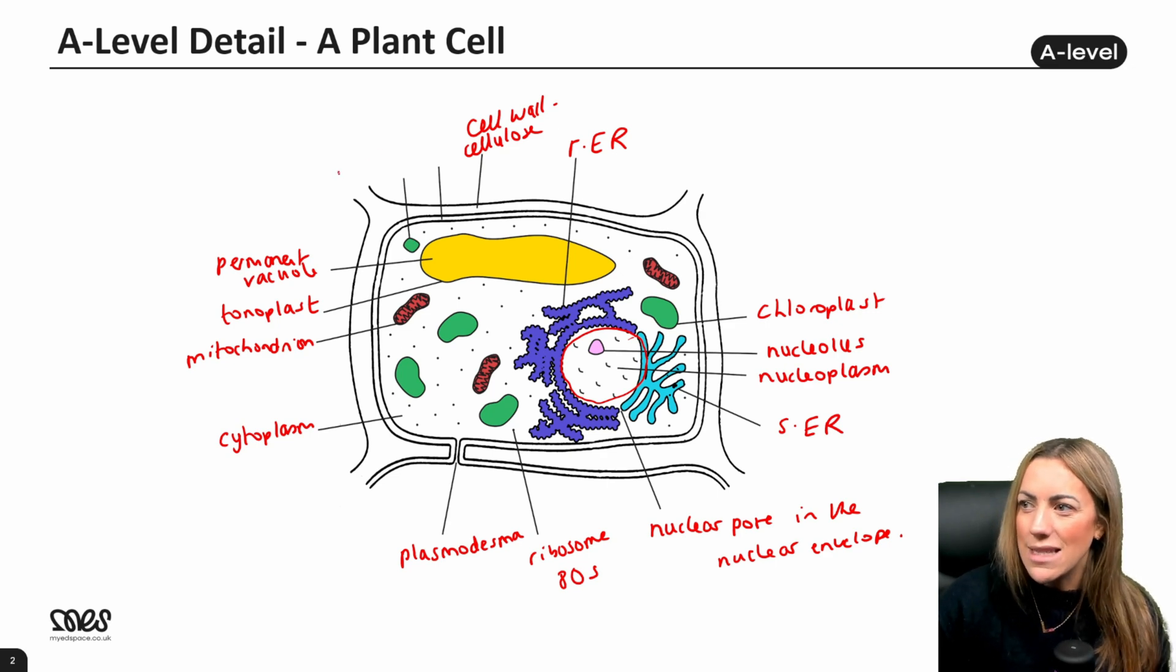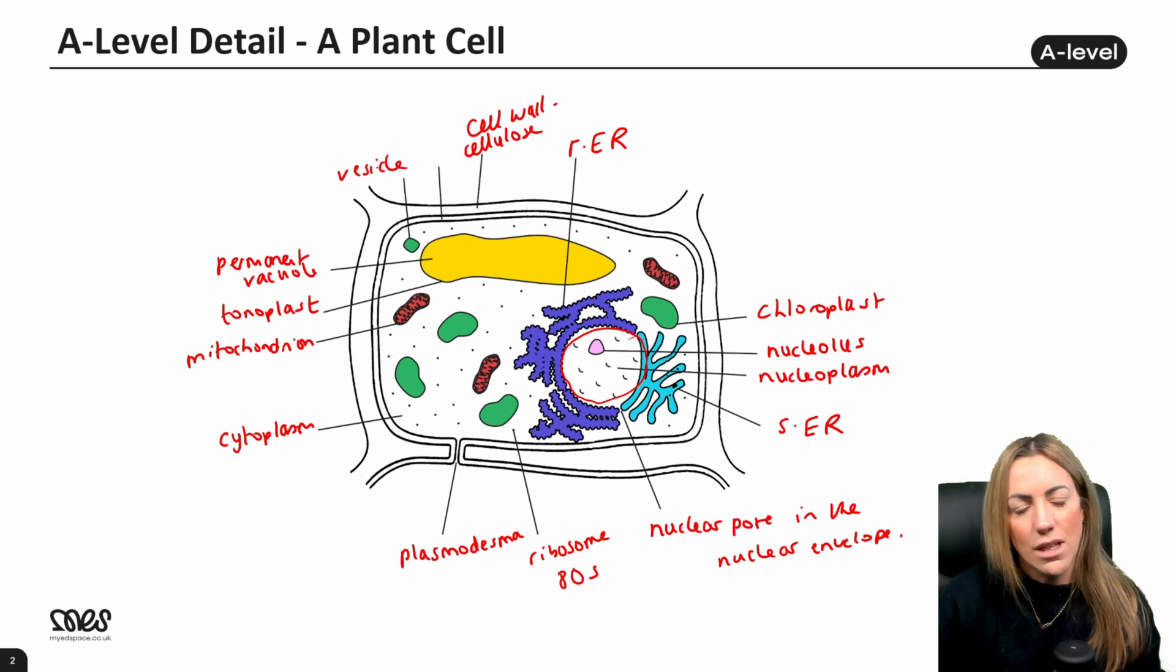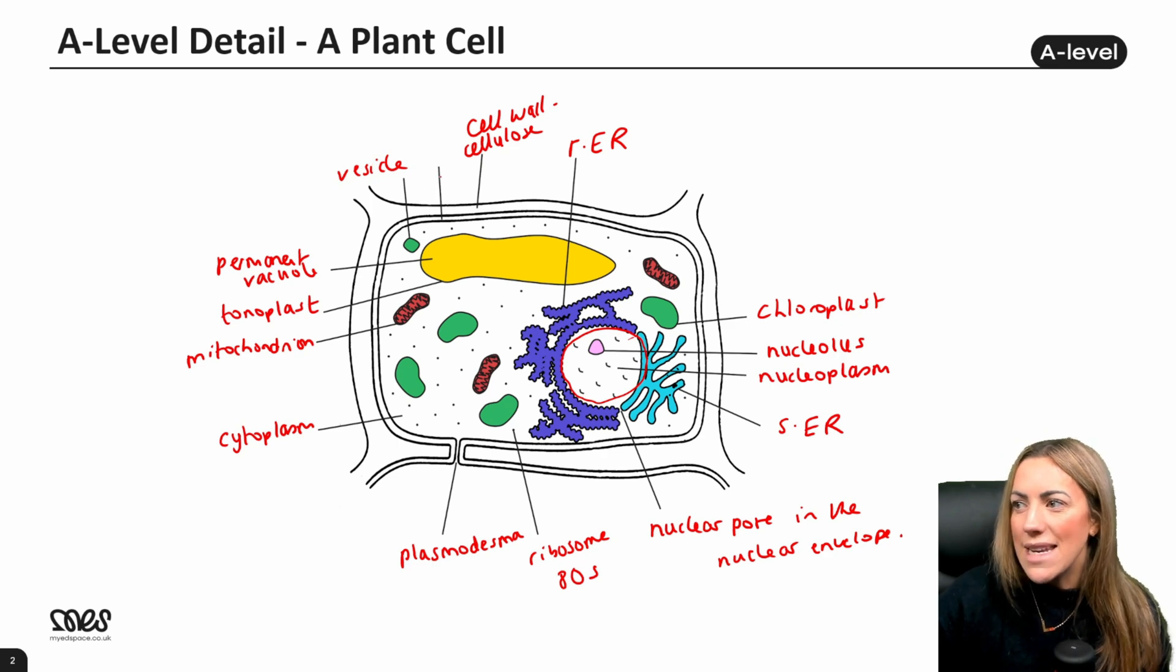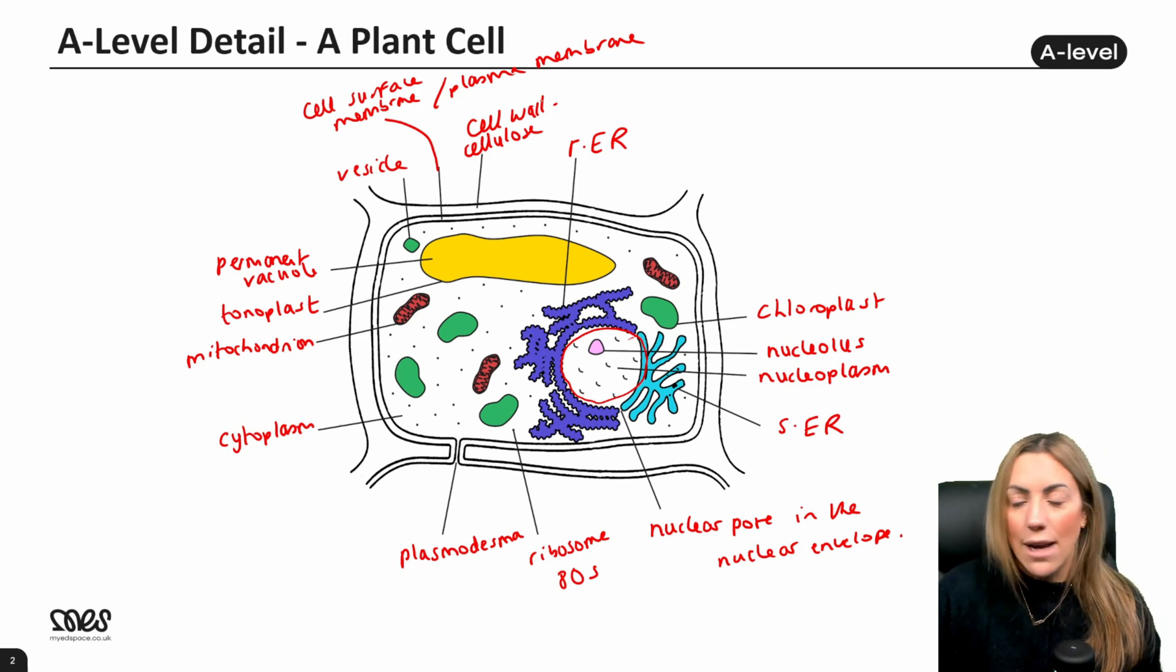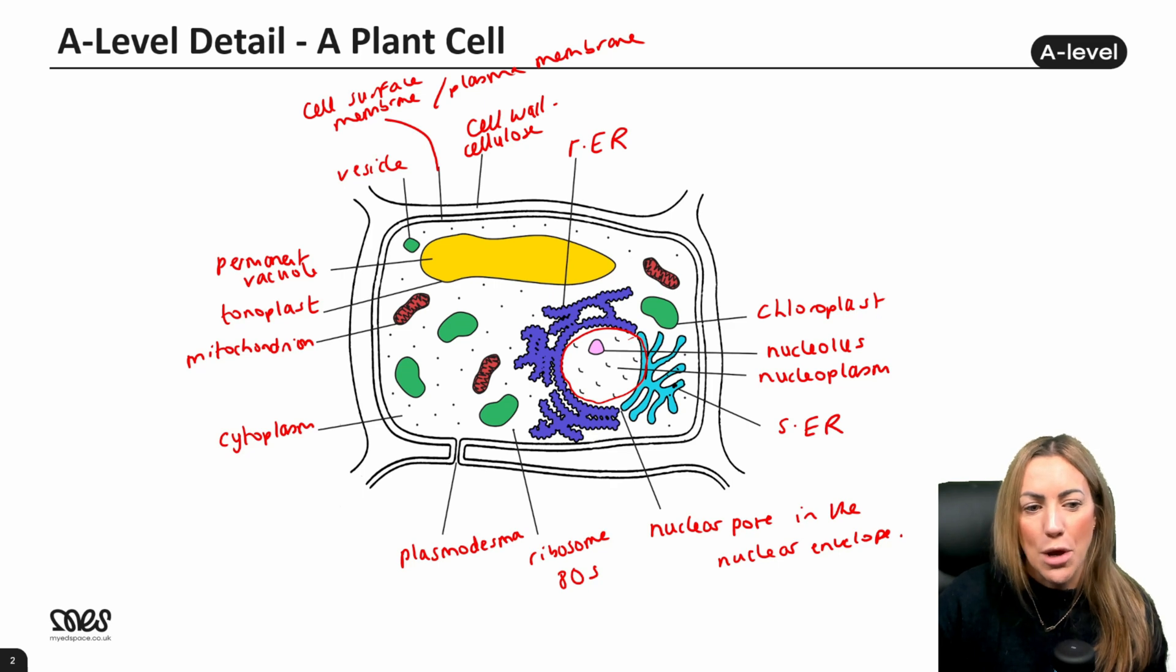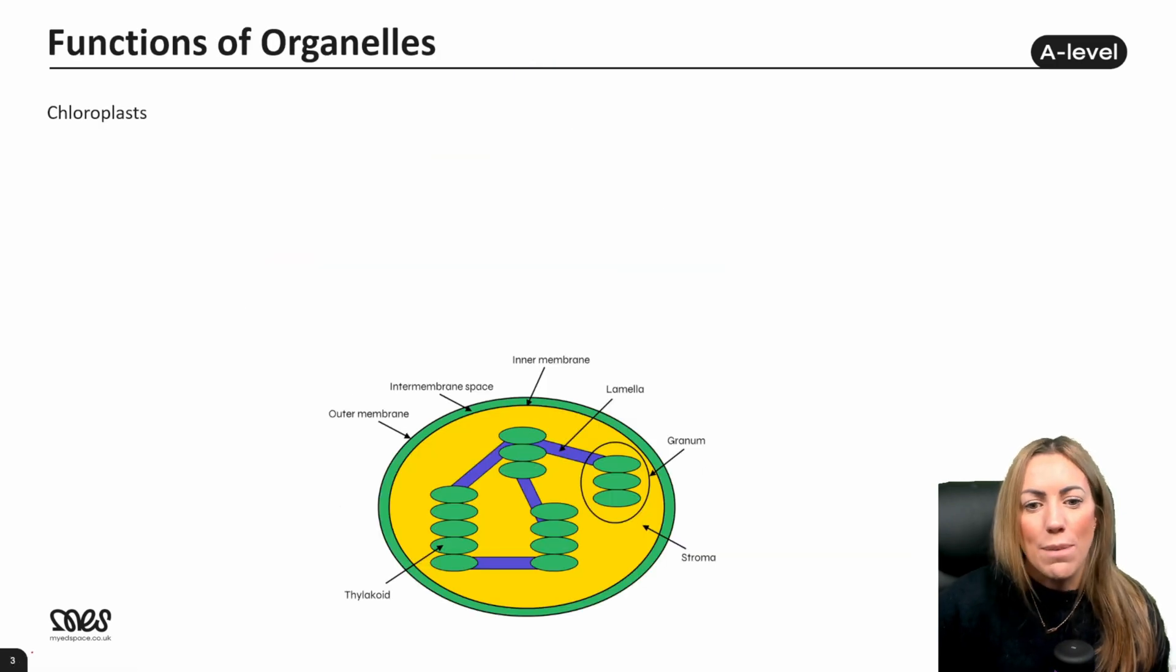And then here, I'm guessing this is some kind of vesicle, a smaller vesicle containing maybe a protein or an enzyme. And then inside the cell wall, we've got the cell surface membrane, or alternatively we can call it the plasma membrane. So you've learned most of these organelles already because they're found in animal cells too, but we have got some new ones. We've got the cellulose cell wall, chloroplast, and that large permanent vacuole. So let's go through now and see if we can learn more about their structures.